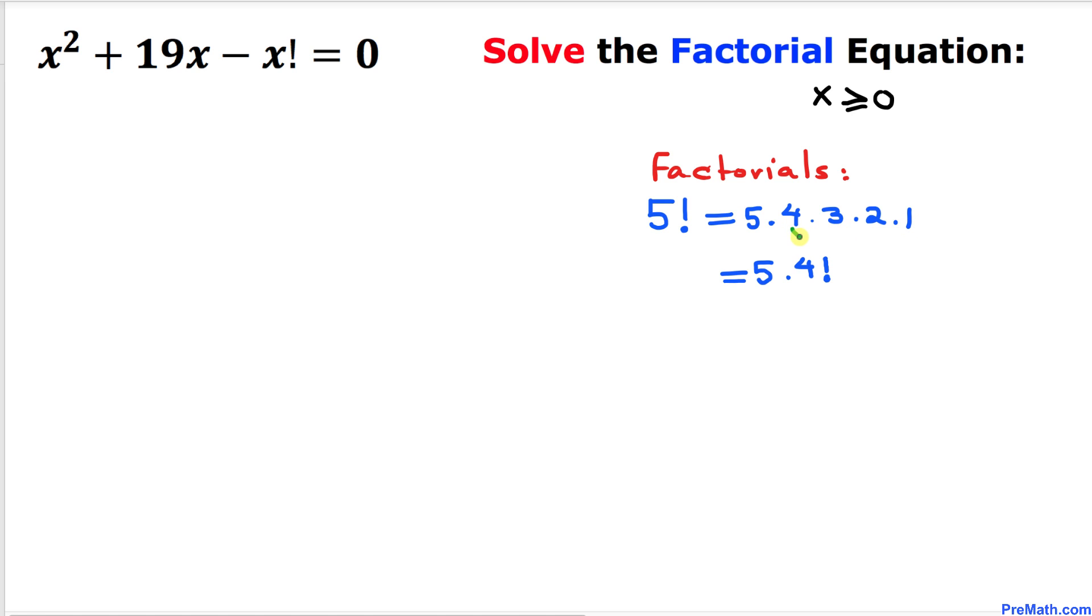Now, 4 × 3 × 2 × 1 can be written as 4!. Therefore, 5! can be written as 5 × 4!. Keep this in mind—we are going to use this fact in solving the equation.